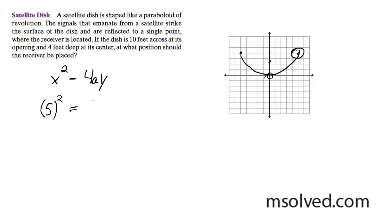It's equal to 4, and then it's 4 feet high, so y is 4 in this case, and we want to figure out what a is. This is 25, this is 16. a is equal to 25 divided by 16, which ends up being 1.5625 feet.